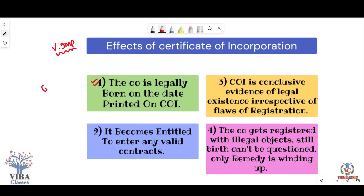Changes to the date are not applicable once the Certificate of Incorporation is issued. If you feel the date is incorrect, you would need to apply again — but generally, once the COI is issued, no changes are made. The second point: from the date of incorporation, the company becomes entitled to enter into any valid contract. Before this, only promoters existed; the company had no legal identity. Now, with its birth, any contract entered into after this date is valid and binding on the company.